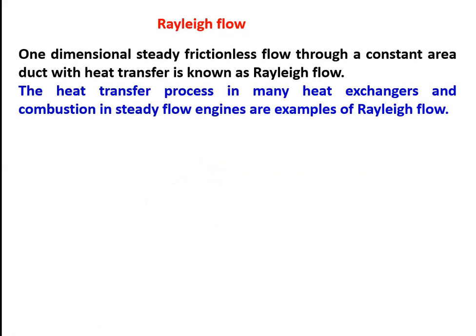Rayleigh Flow is one-dimensional steady frictionless flow through a constant area duct with heat transfer. In the previous lectures, we discussed isentropic flow — a highly hypothetical ideal situation with no friction and no heat transfer. In the Fanno flow, there is no heat transfer, only friction. In Rayleigh Flow, frictional effects are negligible and we deal with heat transfer. So it is a one-dimensional steady frictionless flow through a constant area duct with heat transfer, called Rayleigh Flow.